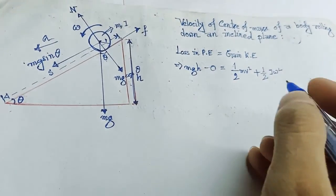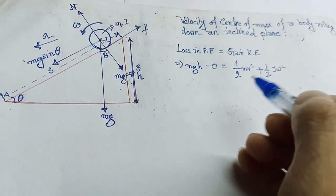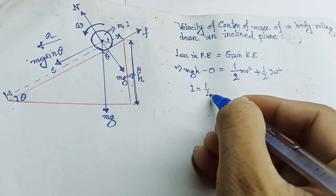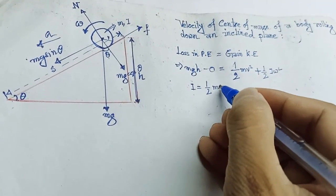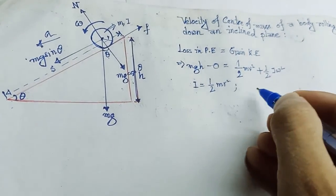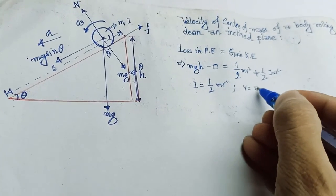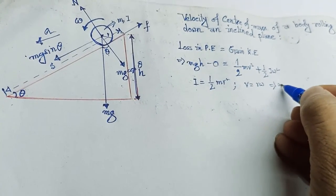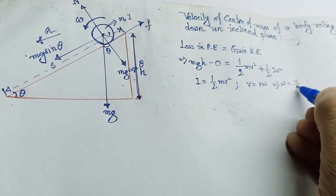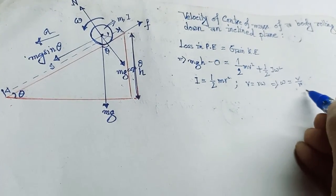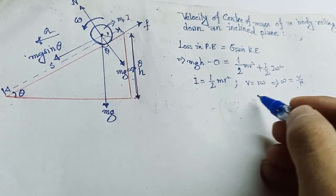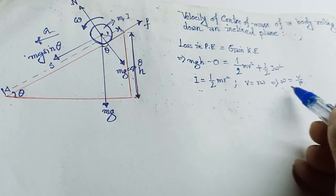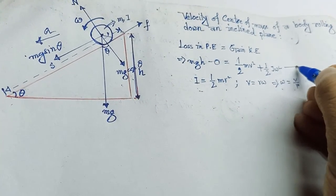The moment of inertia of a cylinder is i equal to half m r squared. Also, we know v equals r omega, so omega becomes v divided by r. We'll substitute these values into our equation.